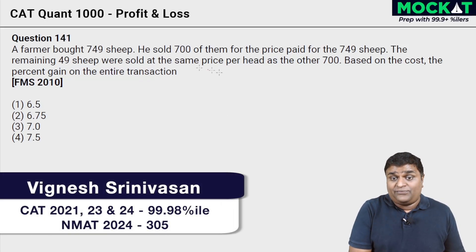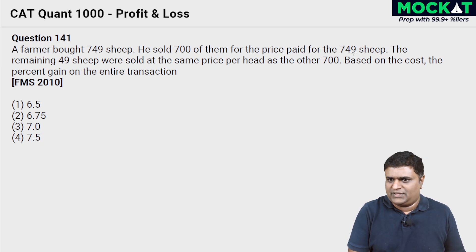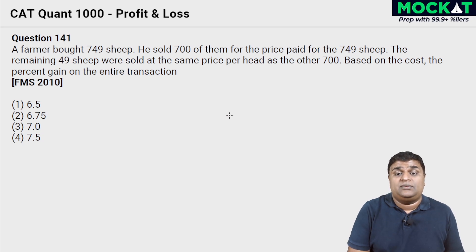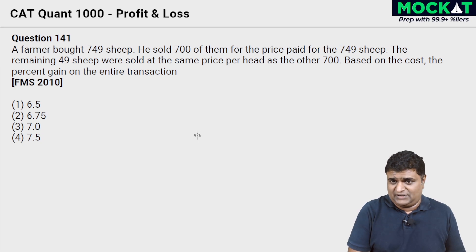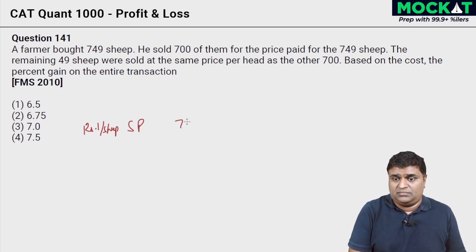On request number 141: a farmer bought 749 sheep. He sold 700 of them for the price he paid for the 749 sheep. The remaining 49 sheep were also sold at the same price per head as the other 700. Based on the cost, the percentage gain from the entire transaction is what? Now, let's say the selling price is rupees one per sheep.